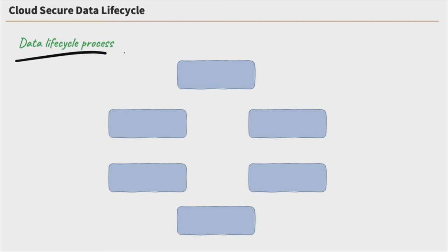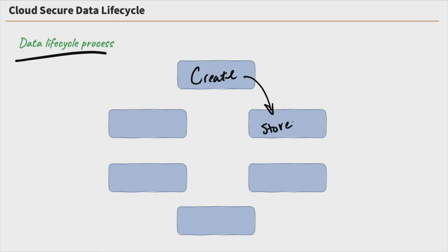Here is our data lifecycle in the cloud. We start off with creation — we create our data because if we don't create it, we don't have data. Once we've created the data, what's the first step? We need to store it somewhere. It's very important that we understand where it is being stored — physically, where is it? What country is it in? What cloud vendor is it under, or are we keeping it on premise? We need to know where that data is.